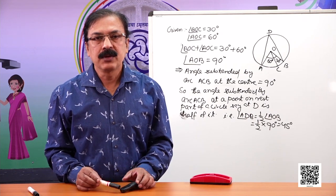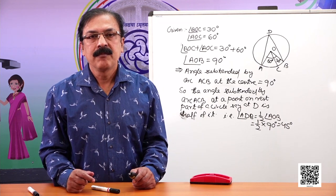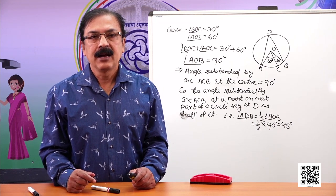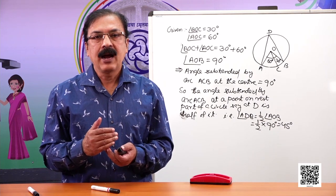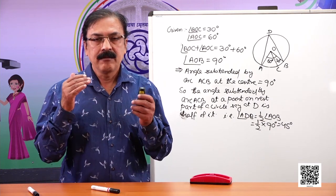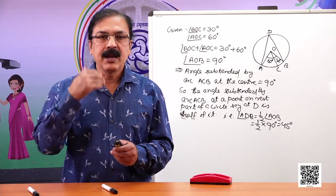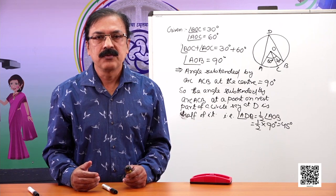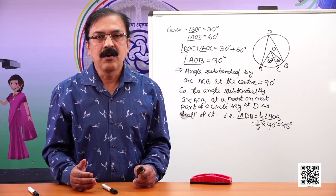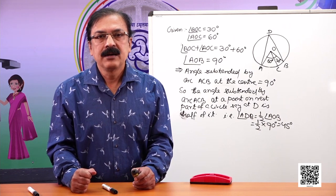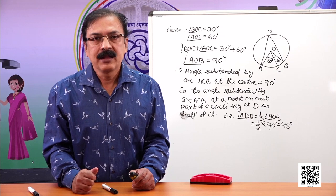Dear students, today we learned about the angle subtended by an arc, and the relationship between the angle subtended by an arc at the center and at the remaining part of the circle. I hope you understood all these discussions. Have a good day. Thank you.